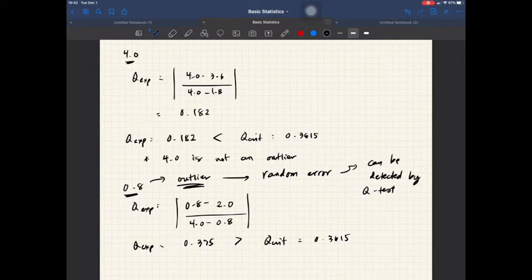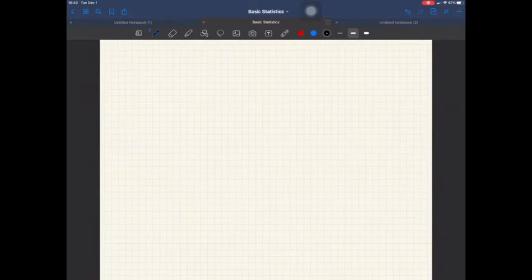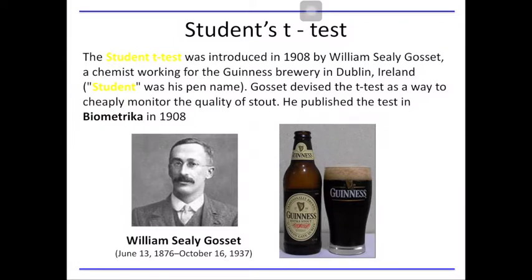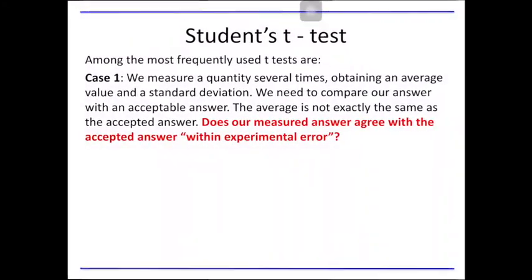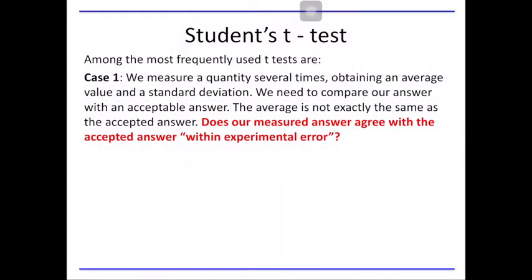Finally, in order to detect systematic errors in measurement, we have to make use of the T-test. The Student's T-test was introduced in 1908 by William Sealy Gosset, who was a chemist working for Guinness Brewery in Dublin, Ireland. Student was his pen name. He devised the T-test as a way to cheaply monitor the quality of their beer products, and published it in Biometrica in 1908.